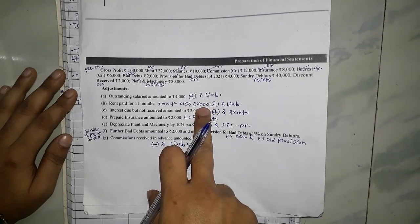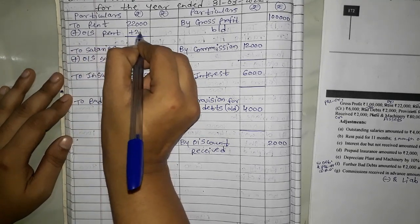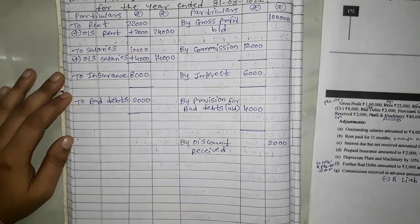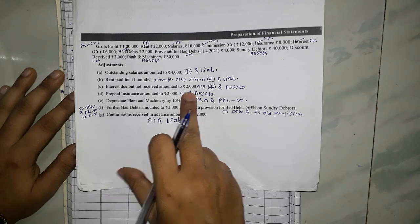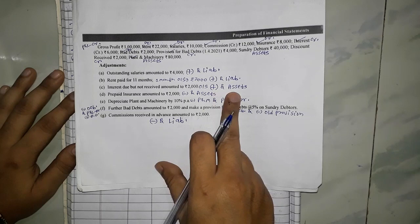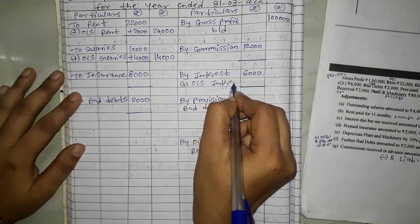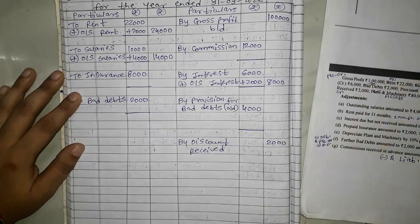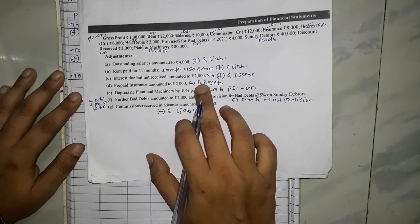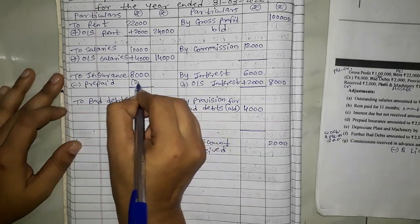After that rent paid for 11 months — outstanding amount is 2,000 — add and liability. We don't have a balance sheet so just add it to rent. For interest: outstanding interest — add outstanding interest — amount is 2,000 — so total interest becomes 8,000. Thereafter prepaid insurance — prepaid is always minus and asset. We don't have a balance sheet so just minus it: 'Minus Prepaid' 2,000. So insurance balance here is 6,000.